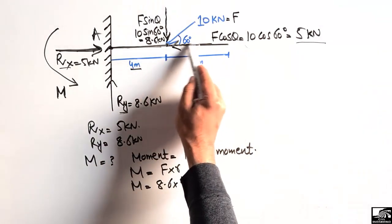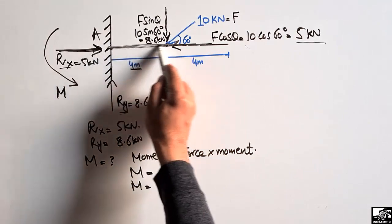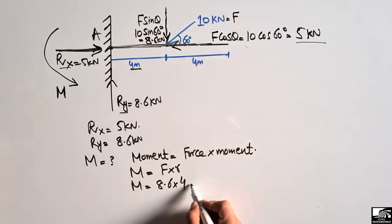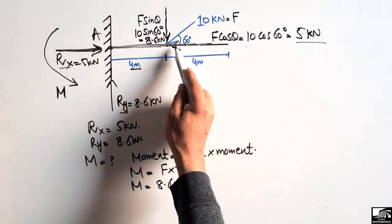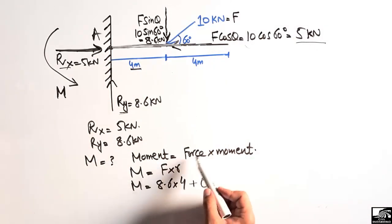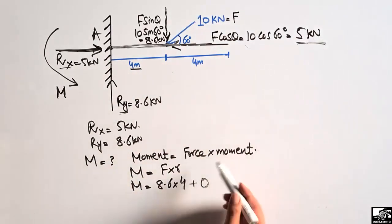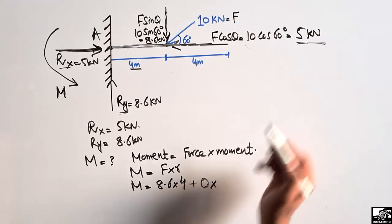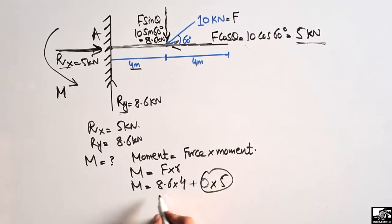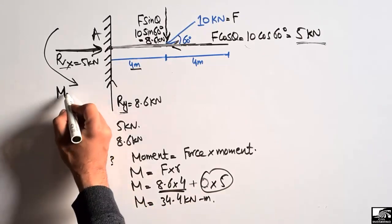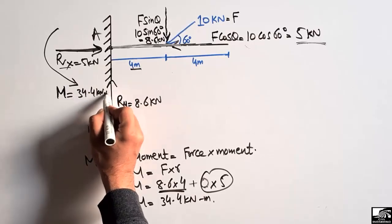We cannot take any moment from the horizontal load because that load passes directly through the fixed support point A, so there is no moment arm for it. The horizontal force is 5 kilonewtons but the moment arm is zero, giving zero moment contribution. Therefore, only the vertical load contributes: 8.6 × 4 = 34.4 kilonewton-meters. This is the moment acting at this support.